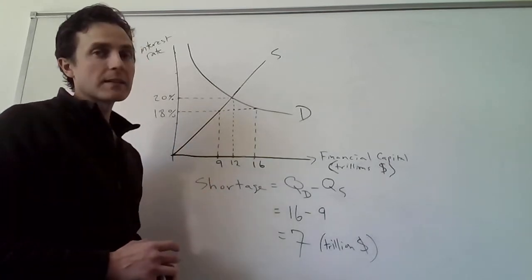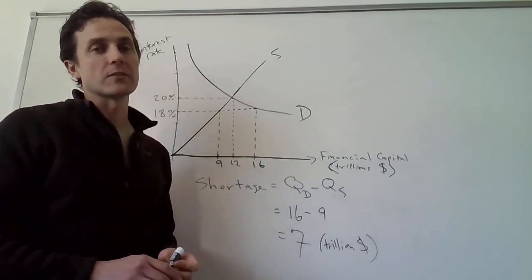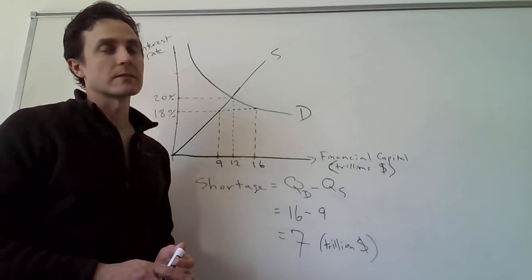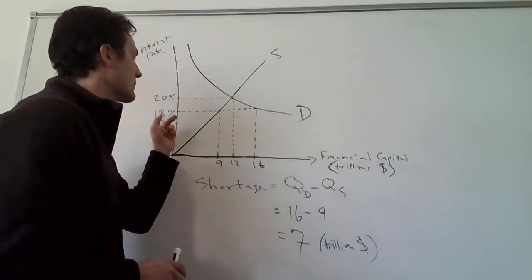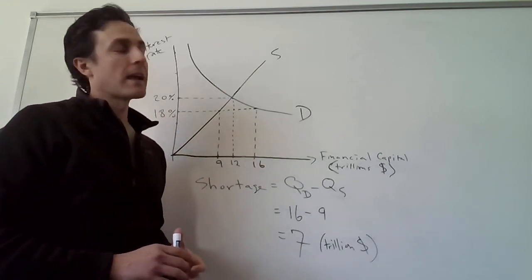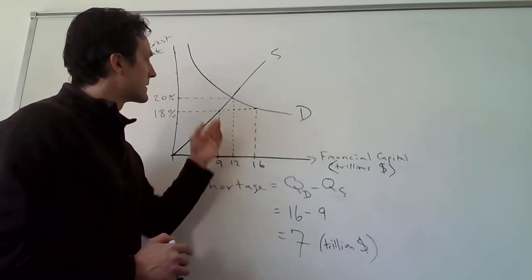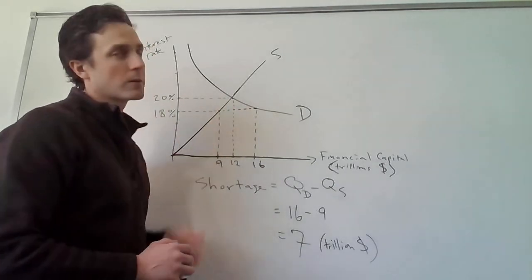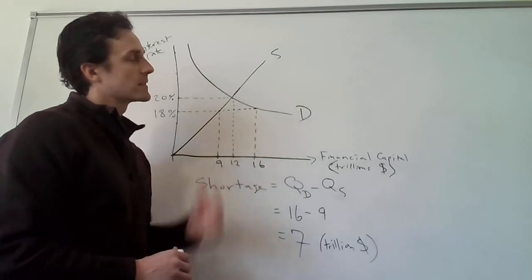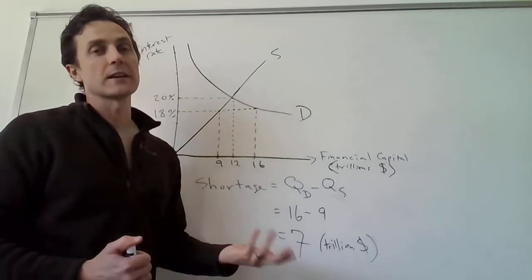This will be a binding price ceiling, a binding usury law, and the interest rate would be 18%. What that means is that the interest rate is going to be lower than what it would be in equilibrium, so the quantity demanded and the quantity supplied are not going to be equal.